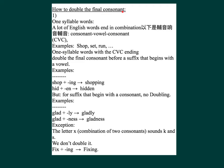How to double the final consonant. Number one: one-syllable words. Many English words end in the combination consonant-vowel-consonant (CVC). Examples: shop, set, run. For one-syllable words with a CVC ending, double the final consonant before a suffix that begins with a vowel.